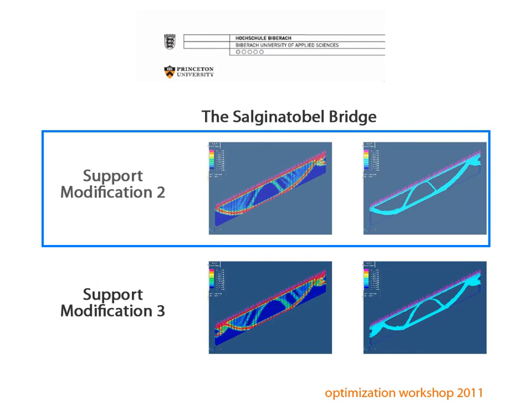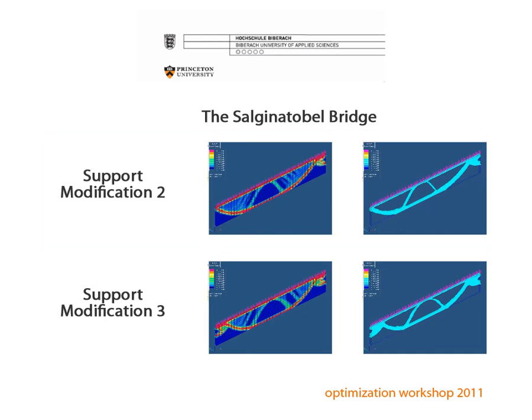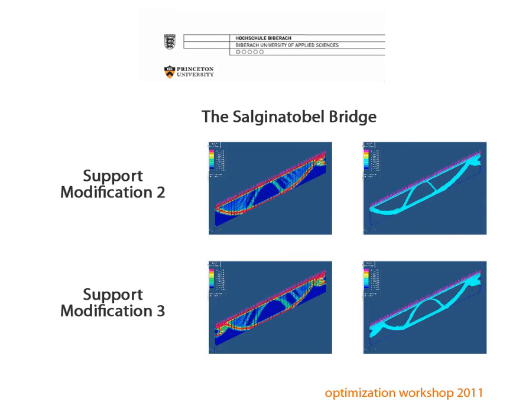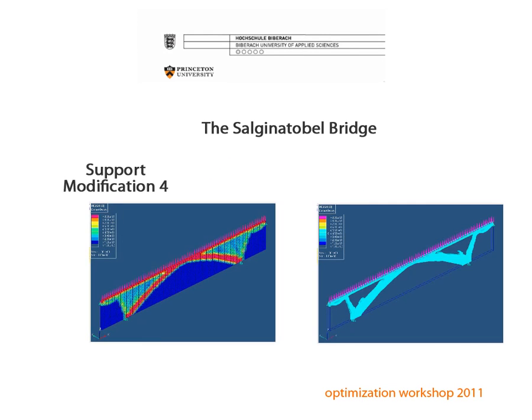For support modification 2, one support is added on the right side of the bridge, roughly at one-third of its height under the top level. For support modification 3, one additional support is added on the left side of the bridge, roughly at one-third of its height under the top level, to balance out the initial support previously added on the right side. For support modification 4, the supports have been changed to the underside of the bridge, roughly at one-sixth within both extremities.